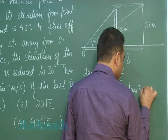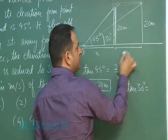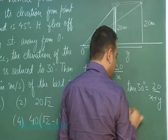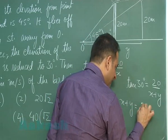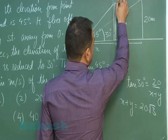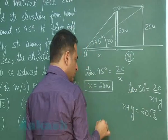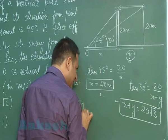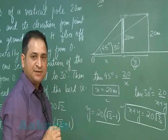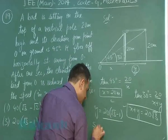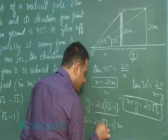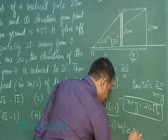Using tan 30°, we get tan 30° equals 20 divided by (x plus y), where the base is x plus y. This gives x plus y equals 20√3. We want to calculate the distance traveled by the bird in one second, which is y. Using these two equations, y equals 20(√3 minus 1). This is the distance traveled in one second, so the speed equals distance divided by time, giving 20(√3 minus 1) meters per second.